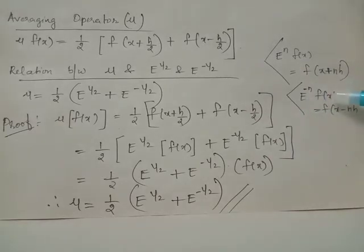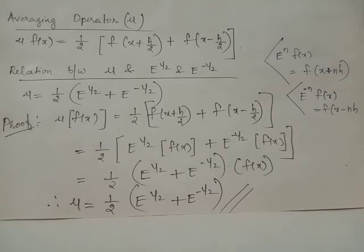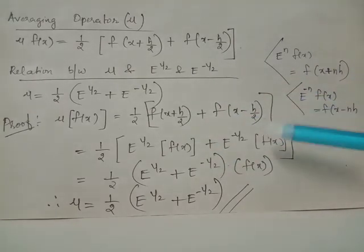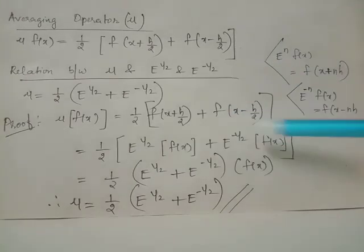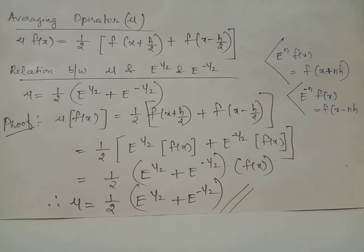Because when E raised to negative n acts on f(x), the output is f(x - nh). Here n equals 1/2, so E raised to negative 1/2 acting on f(x) gives f(x - h/2). Thus we have these two terms rewritten using the shift operator — this is the inverse shift operator and this is the shift operator. We can take f(x) outside these two terms, giving 1/2 times (E raised to 1/2 plus E raised to negative 1/2) with common input f(x). This means giving f(x) as input to mu is exactly the same as giving f(x) to the operator 1/2 times (E raised to 1/2 plus E raised to negative 1/2). Thus, mu equals 1/2 times E raised to 1/2 plus E raised to negative 1/2.